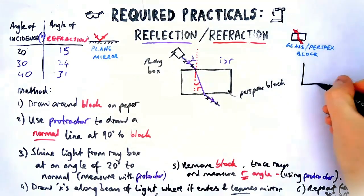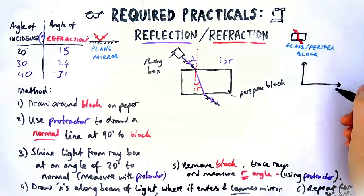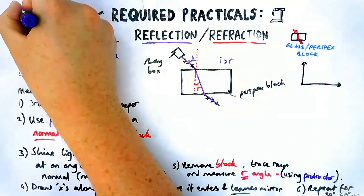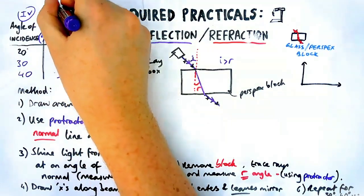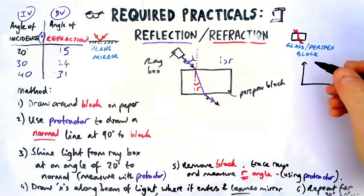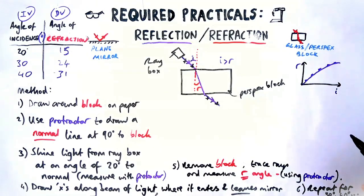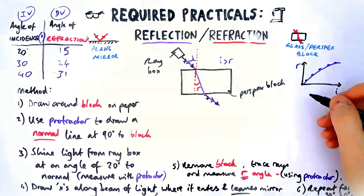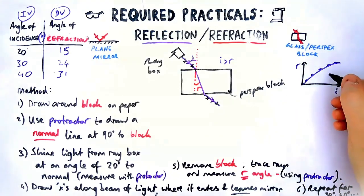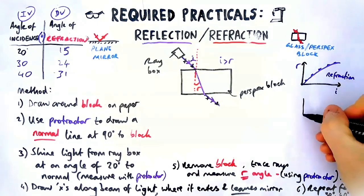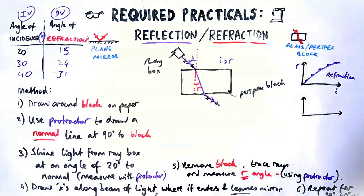Now plotting a graph for the reflection practical is going to be relatively straightforward. My independent variable IV goes on the x-axis and the dependent variable goes on the y-axis. Now for the refraction practical, this isn't going to be a straight line and this will curve. So be prepared to draw a curved line of best fit for this practical. It should be a smooth curve, just one line going from the origin between as many points as you can.